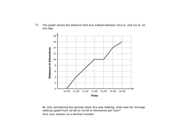Let's begin by considering the periods when Ava was walking. Between 10am and 11am, you can see that she walked a total of 4km. She starts at 0 and by 11am she's reached 4km. So that's our first marker, 4km. And of course that 4km took her 1 hour in total.